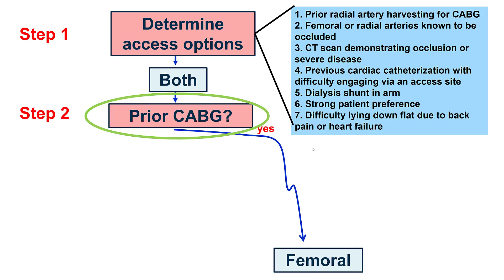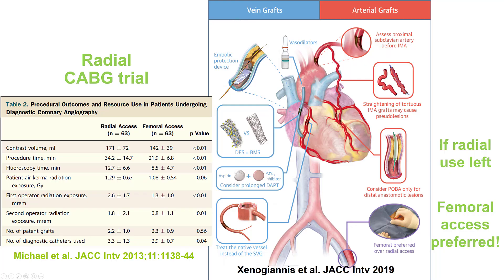The next question is whether the patient has previous coronary bypass. Although cardiac catheterization can be done via radial in previous bypass patients using the left radial, femoral is preferred in my opinion. The reason is it is much easier to engage the bypass grafts and native vessels from the femoral, resulting in less contrast, less radiation, and better quality images. If radial access is chosen, the left radial should be used to facilitate engagement of the LIMA; using right radial to engage the LIMA is more cumbersome and therefore less preferred.